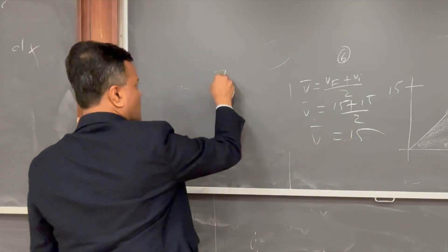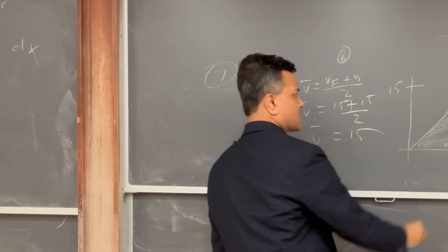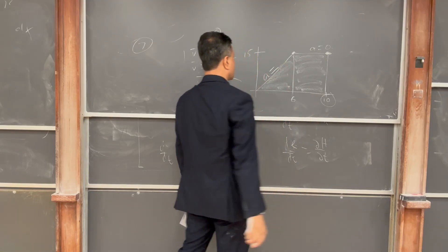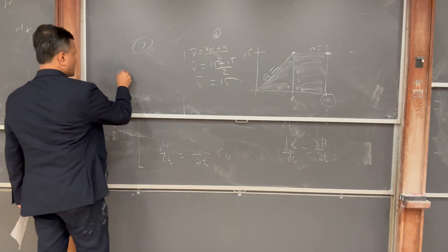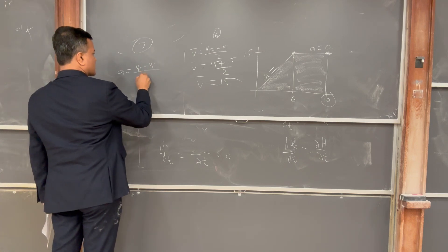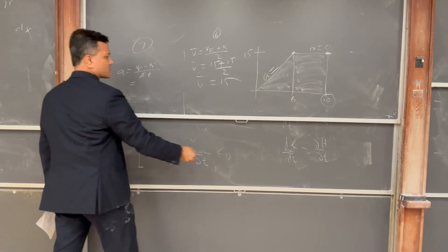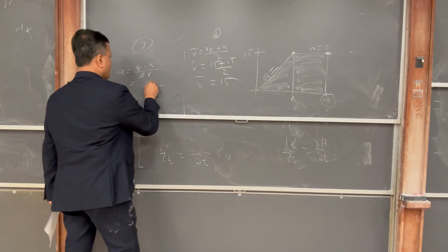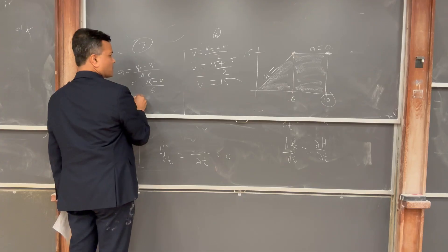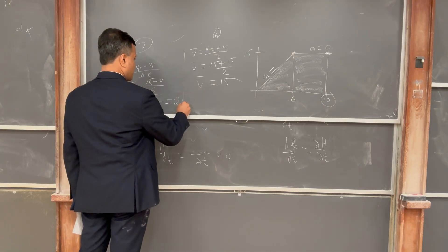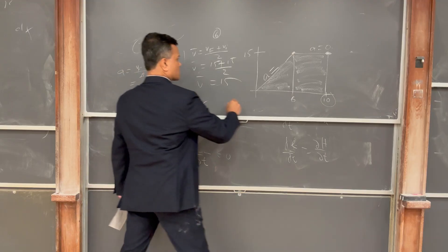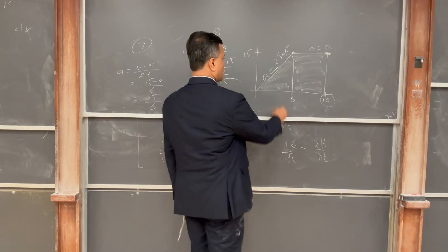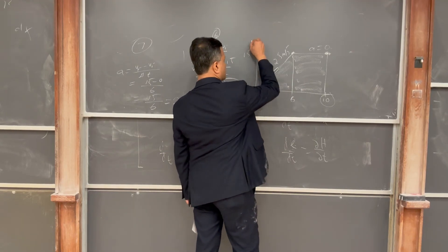Problem seven asks for the acceleration from t = 6 to t = 10 — that is zero, since velocity is constant there. But before that section, acceleration equals (vf − vi) / Δt. Here Δt = 6 − 0 = 6, vf = 15, vi = 0. So acceleration = 15/6 = 2.5 meters per second squared. From t = 6 to t = 10 the acceleration is zero.